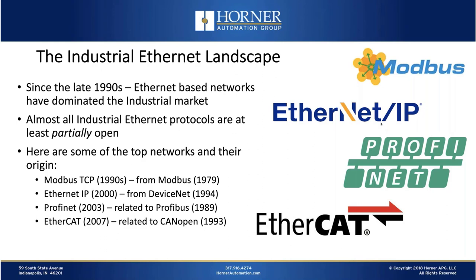Today there are multiple industrial Ethernet protocols, and most of them are at least partially open. Keep in mind that 25 years ago, most protocols were proprietary — things have definitely changed. Today the most commonly found networks include Modbus TCP, which had its origins in the Modbus serial protocol from the late 70s, and Ethernet IP, which is what we're going to talk about today. It had its origins with DeviceNet, a protocol that operated over CAN, still around but faded considerably since the 90s.